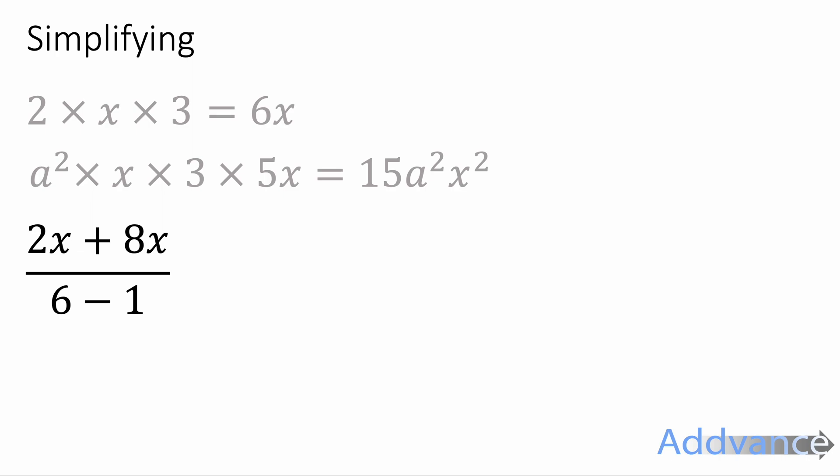Now, 2x plus 8x divided by 6 minus 1. When you've got numbers like this, this is a fraction. In algebra, a fraction means divide. On the top, we've got 2x plus 8x is 10x. On the bottom, 6 minus 1 is 5. Now we've got 10x divided by 5. I'll just divide the numbers. 10x divided by 5 is 2x, because 10 divided by 5 is 2. Very nice. And that is the final answer.